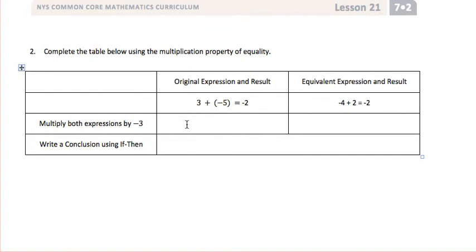If we then multiply both expressions by negative 3, keeping in mind that we need to put our original expression in parentheses, negative 3 times the quantity 3 plus negative 5 would be negative 3 times negative 2, which is positive 6.